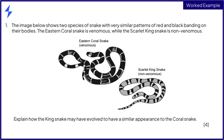This exam question presents us with an image of two species of snake with similar patterns of red and black banding on their bodies. One species, the eastern coral snake, is venomous, while the other, the scarlet kingsnake, is non-venomous. The question asks us to explain how the kingsnake may have evolved to have a similar appearance to the coral snake.